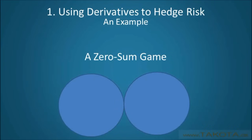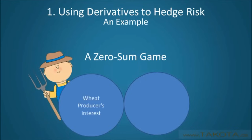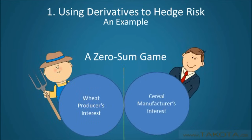Because the price of wheat can only move in two directions — up or down — this example is a zero-sum game, possessing both a distinct winner and a distinct loser. Basically, the interests of only the wheat producer or the cereal manufacturer can be met, not both.